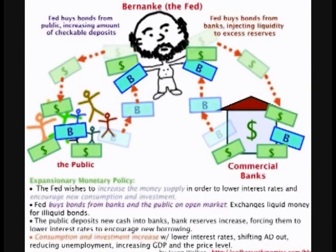When the Fed raises or lowers the Fed Funds target rate, it does not actually physically change the rate. Rather, it changes the rate by increasing or decreasing bank reserves by buying or selling government securities — bills, bonds, and notes. If the Fed wants to lower interest rates, it buys government securities from the open market. When the government pays for the securities, it increases bank reserves, giving banks more money to lend out, which frees up credit. Because there is now more money to lend out, banks must lower their lending rates to attract more borrowers.